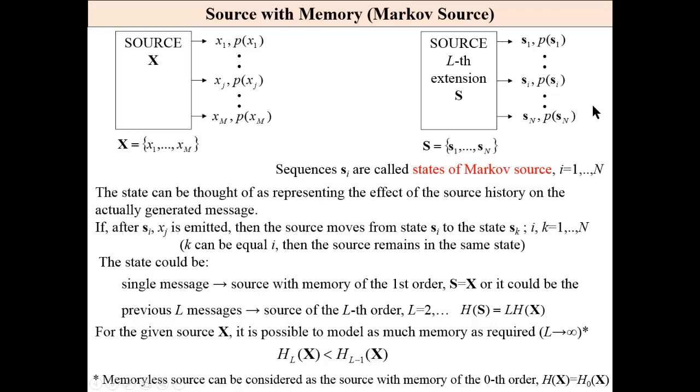The higher is the source order, the lower is entropy and predictability. Source without memory can be considered as source with memory of the 0th order.